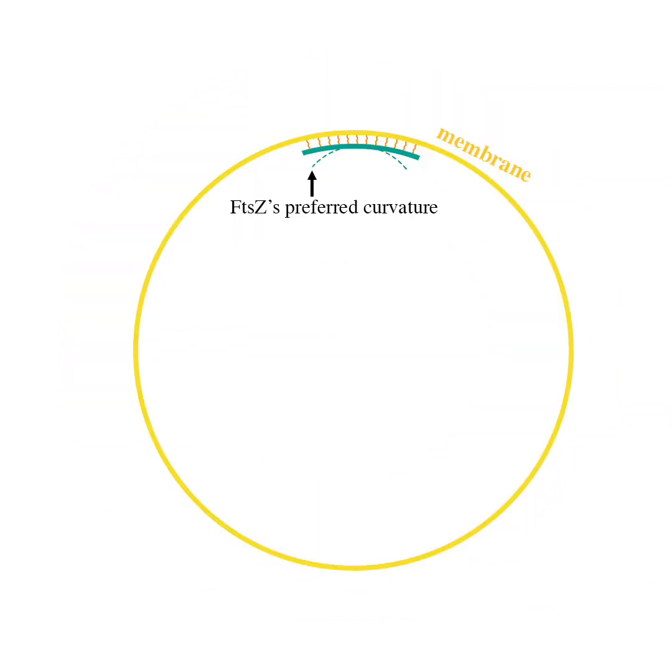We realized that membrane constriction requires that the filament's preferred curvature is much higher than that of the membrane. However, several studies in the literature suggest that FtsZ's preferred curvature might be small. In either case, constriction would stop when the membrane curvature gets close to that of FtsZ.